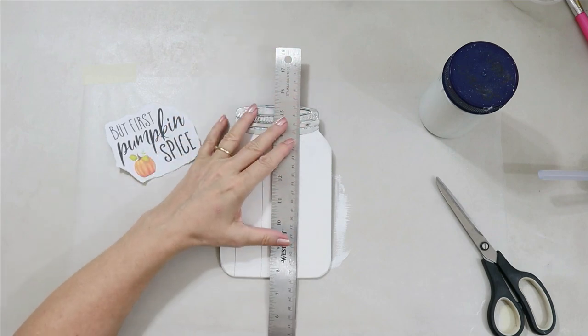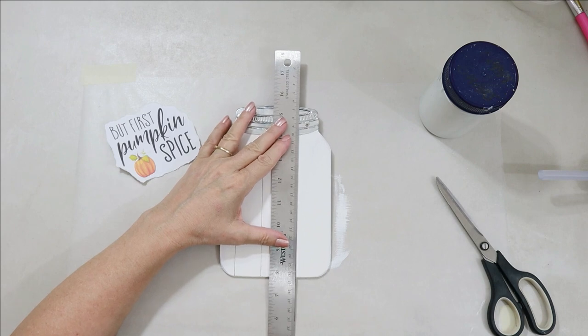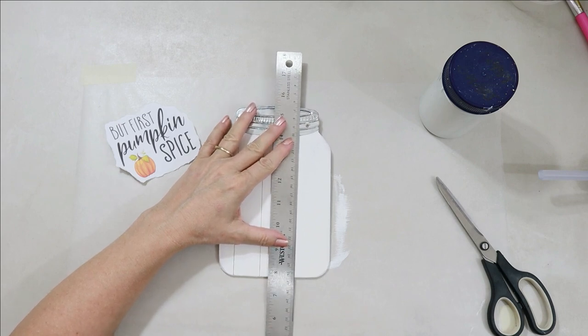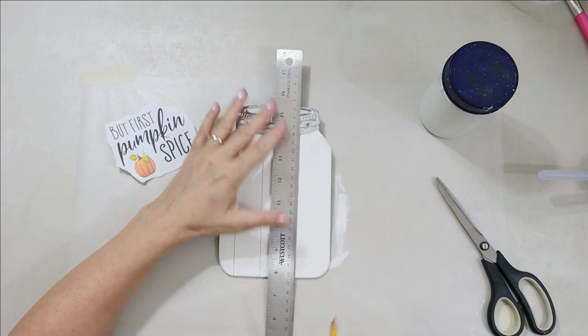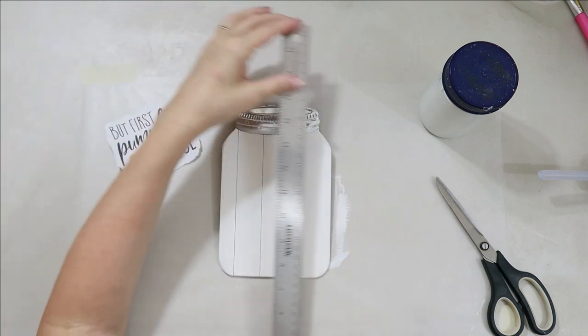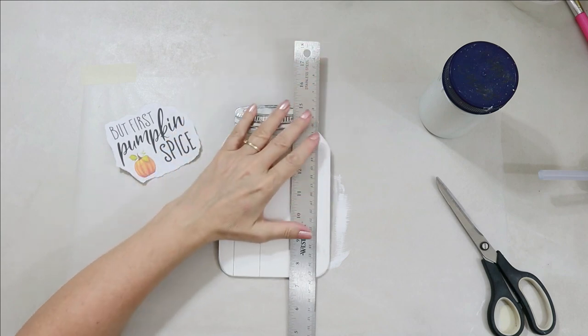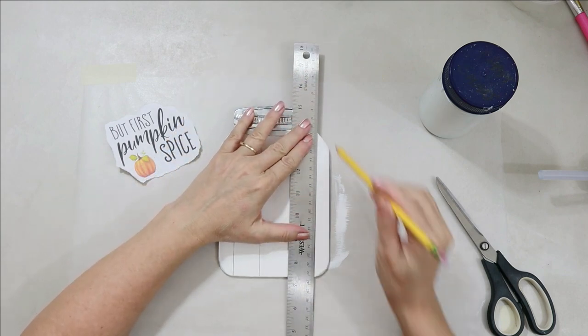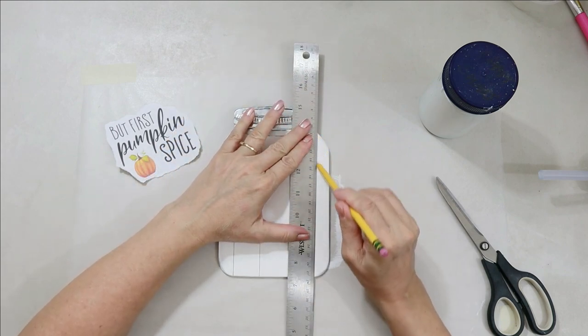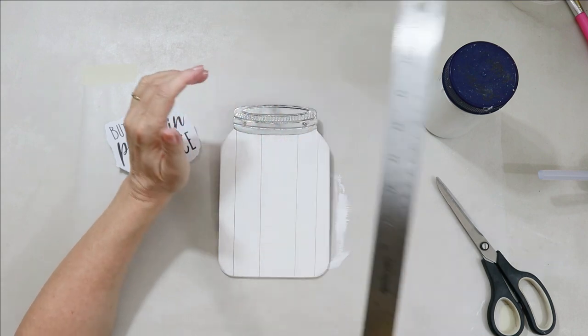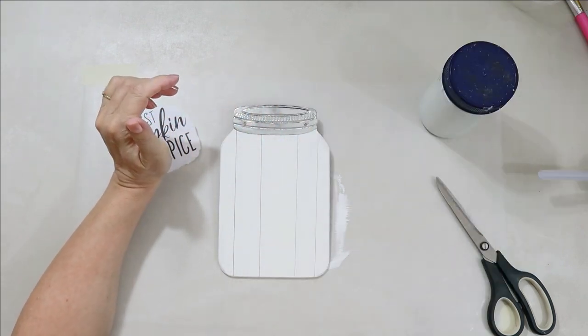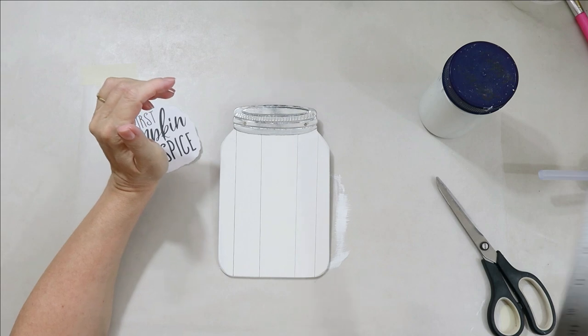And now I'm just going about drawing those faux shiplap lines on this. Now I purposely don't measure them evenly apart because I think it looks more legit. If you actually go on a farm where they're doing palette signs, the different wood that they use is usually different widths and kind of just random. So I do it the same way on my crafts. And I just use a regular old pencil. That works great for me.